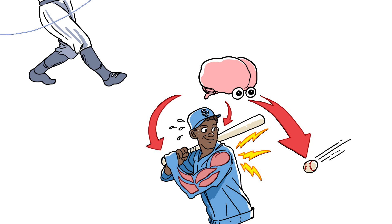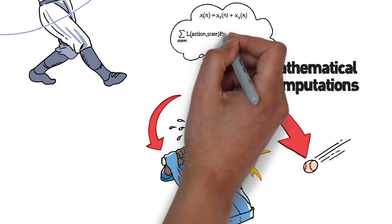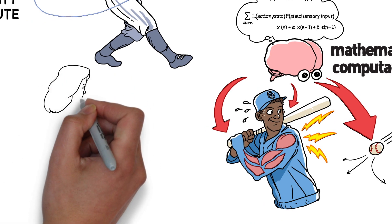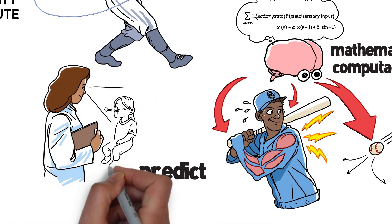In our lab we try to uncover the mathematical computations the brain uses to achieve this exquisite control. The batter starts by anticipating the path the ball will take. We have shown he does this using the same mathematics that doctors use to predict the chance of someone having disease.